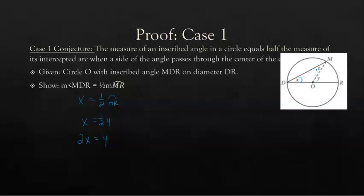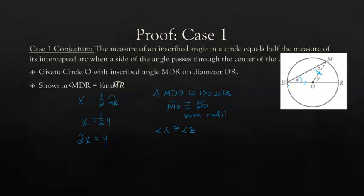Looking at our triangle, it would be helpful if X and Z were the same. MO is a radius and DO is also a radius of the circle, so triangle DOM is isosceles. Since MO is congruent to DO — they are both radii of circle O — we know that X and Z are congruent, because they are base angles of an isosceles triangle.